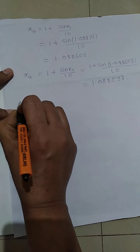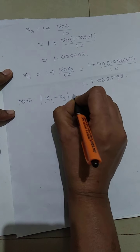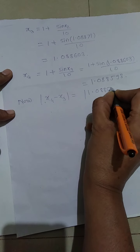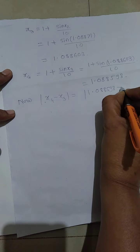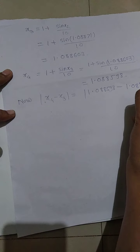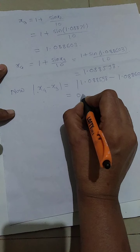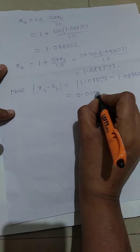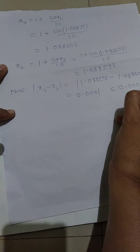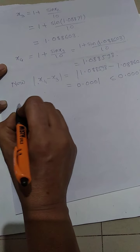We see that x₃ and x₄ have the same value up to 3 decimal places, so this is the converged value. The difference |x₄ - x₃| = |1.088898 - 1.088603| = 0.0001, which is less than or equal to 0.0003.